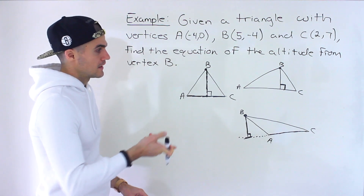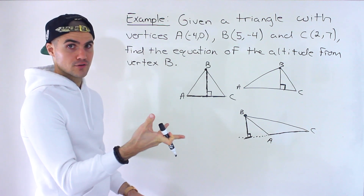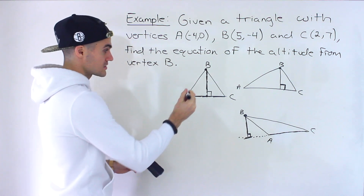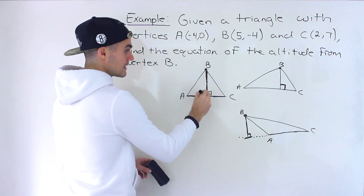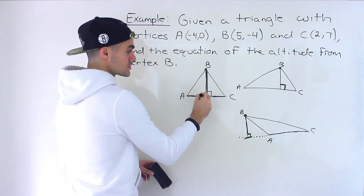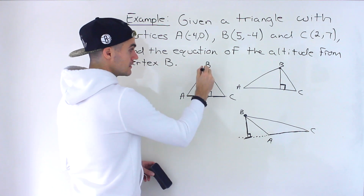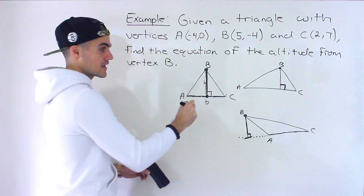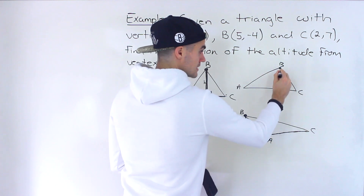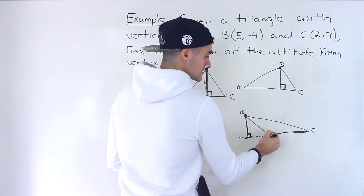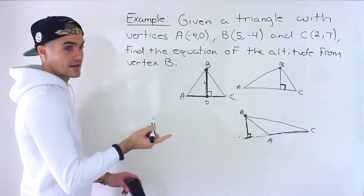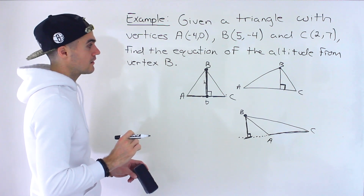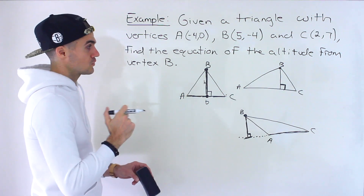The biggest use of the altitude is finding the height of the triangle, which you can then use to find the area. Area equals base times height divided by 2. You find the point of intersection between the altitude and the opposite side, then find the distance between the two points — that's the height. The distance along the base gives you the base. So that's the main use of the altitude.